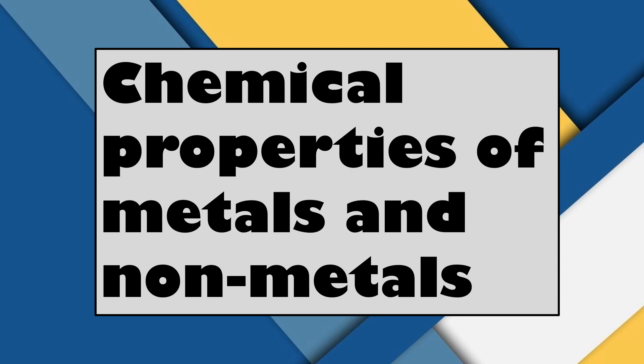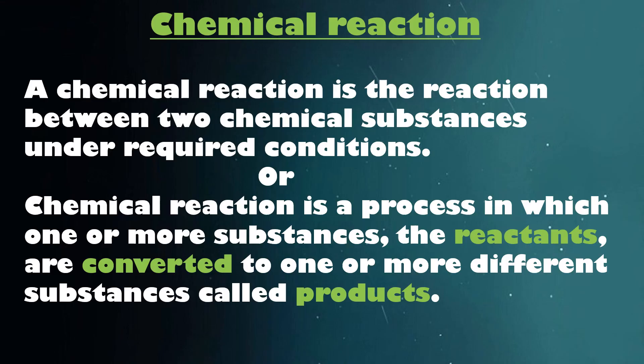A chemical reaction can be defined as the reaction between two chemical substances under required conditions. We can also define a chemical reaction as a process in which one or more substances, called reactants, are converted to one or more different substances called products. Under chemical properties, we will be studying the reactions of metals and nonmetals with oxygen, water, dilute acids, and bases.